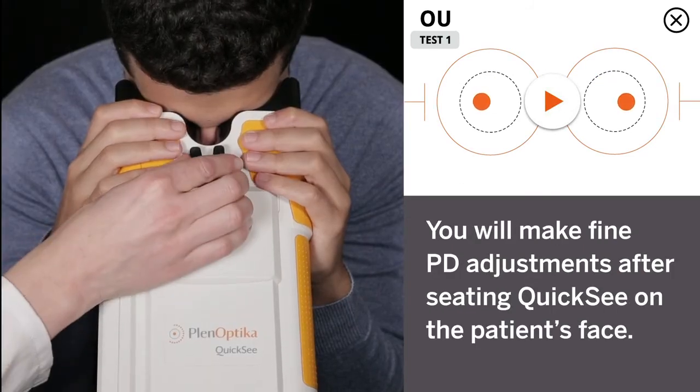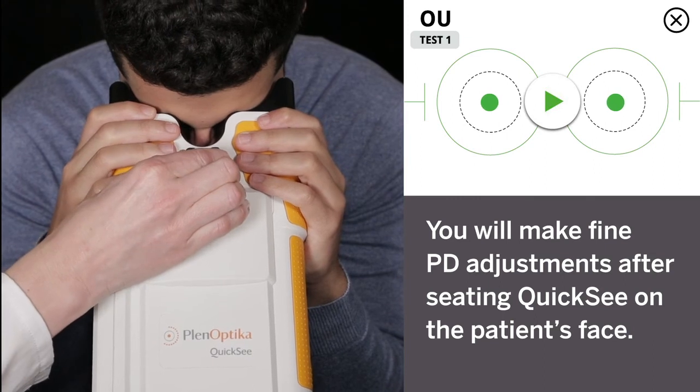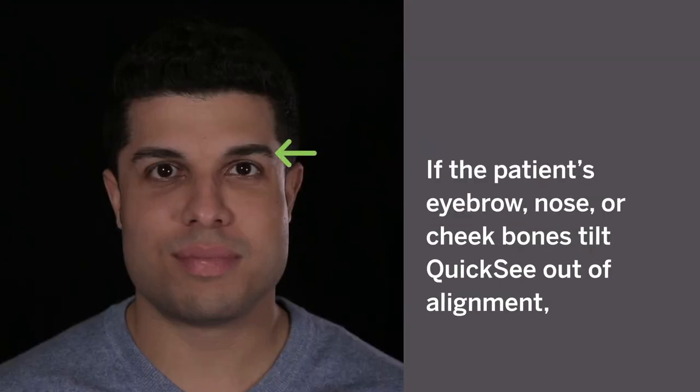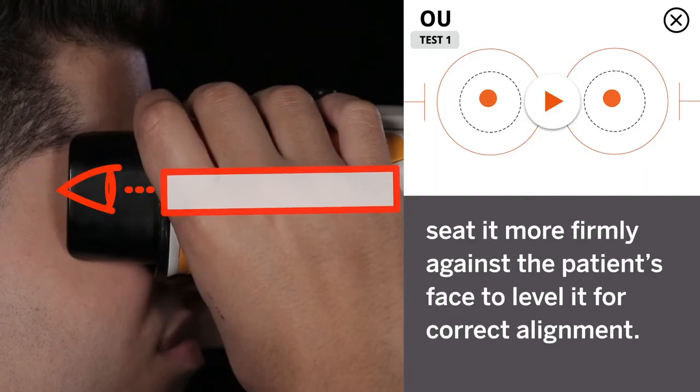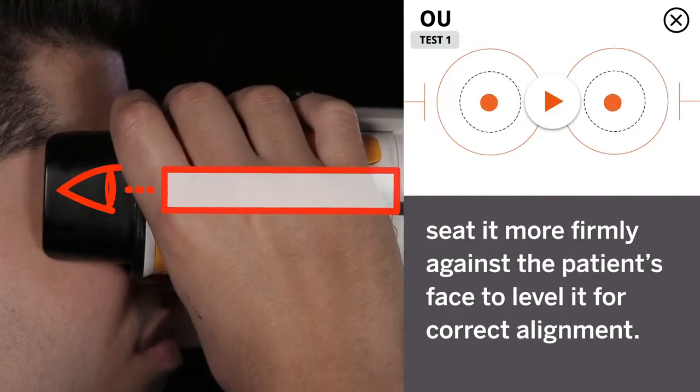You will make fine PD adjustments after seating QuickSee on the patient's face. If the patient's eyebrow, nose, or cheekbones tilt QuickSee out of alignment, seat it more firmly against the patient's face to level it for correct alignment.